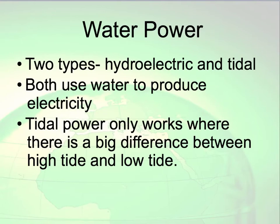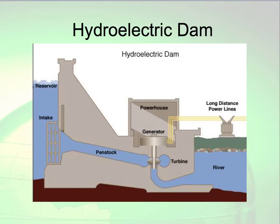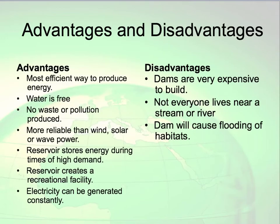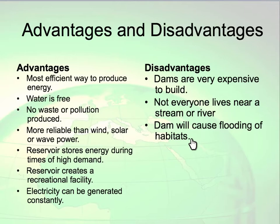Water power has two types: hydroelectric and tidal. Tidal power only works when there is a big difference between high tide and low tide. For a hydroelectric dam, water comes in and turns a turbine to generate electricity. The advantages of hydroelectric power are that it is the most efficient, water is free, and there is no waste or pollution. However, dams are very expensive, not everyone can live near a stream or river, and dams cause flooding of habitats and can prevent animals that migrate upstream from doing so.